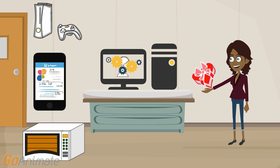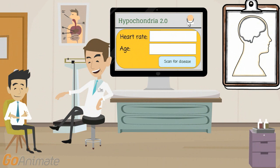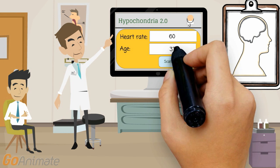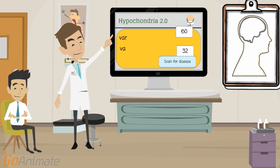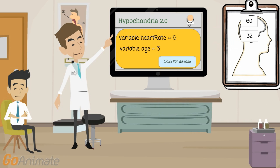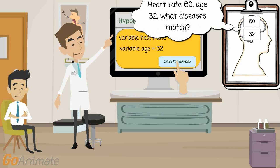A doctor might have software for helping to decide whether a patient suffers from a certain disease. He would enter the patient's data, like his heart rate and age, as the input. These inputs would be stored in the computer's memory with so-called variables.